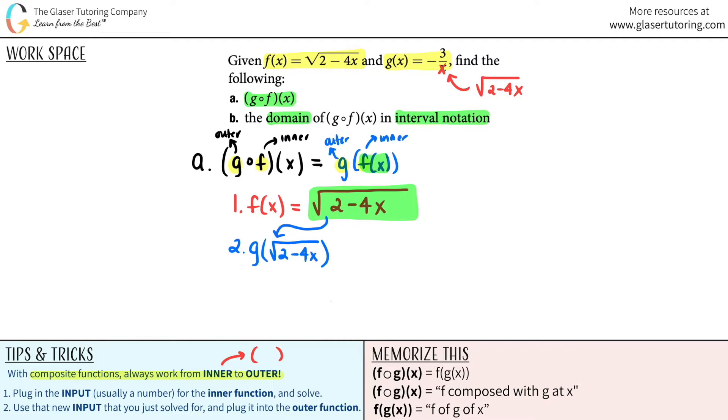So I'm going to let this equal and the g function was negative three over the square root of two minus four x. Now I'm going to put a star here.